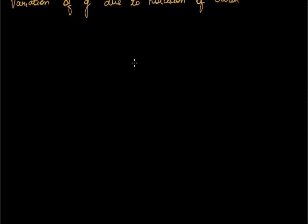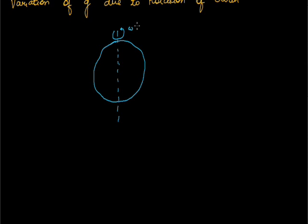For this, we draw the diagram of Earth. Suppose this is our Earth. This is the axis about which our Earth rotates. The dotted line is the axis of rotation by angular frequency omega. Our Earth rotates with angular frequency omega. This is our equator. This is a point where our observer is present, that is point A. Suppose at the poles, that is point P. The Earth is rotating about its axis from west to east.